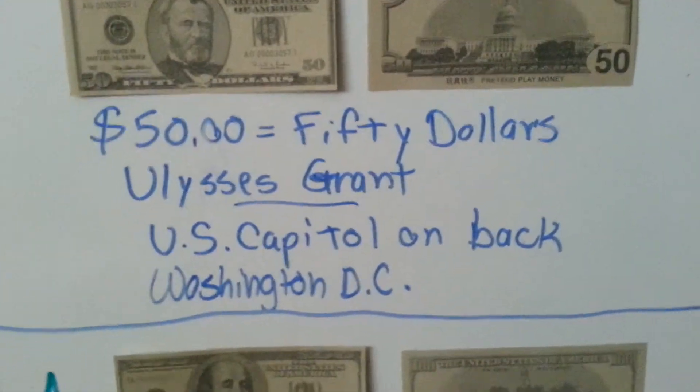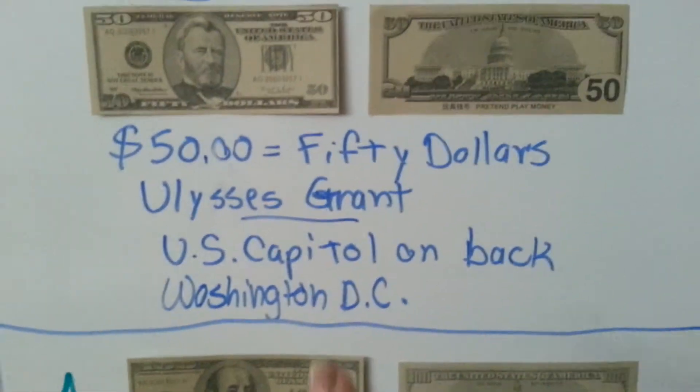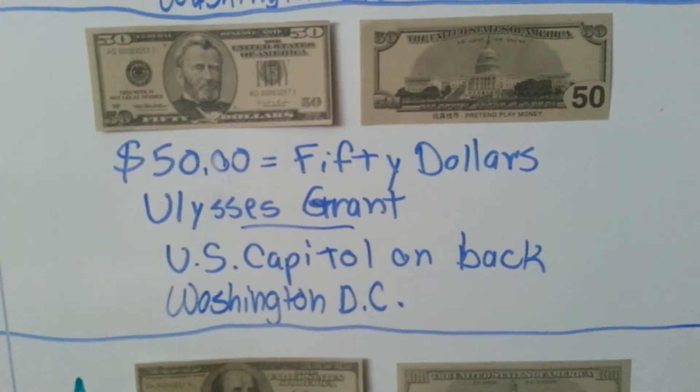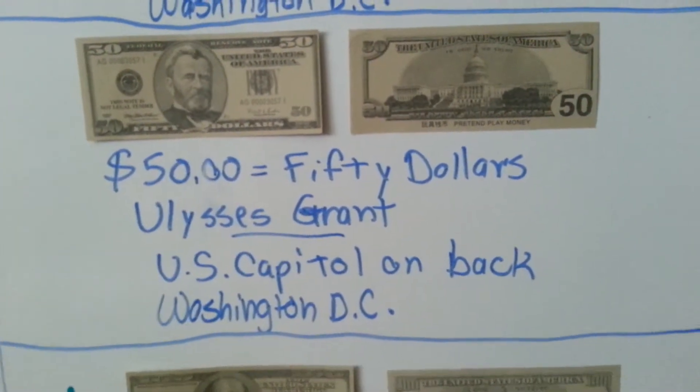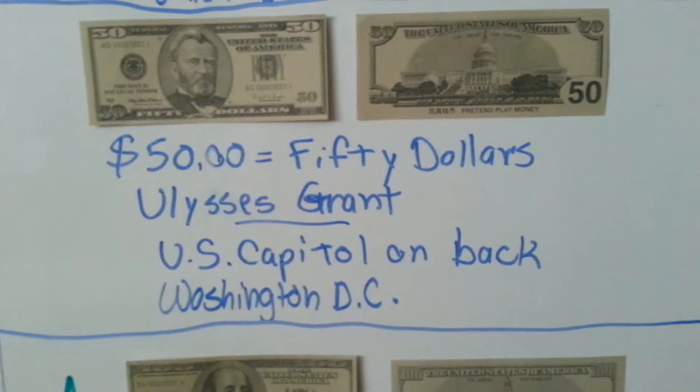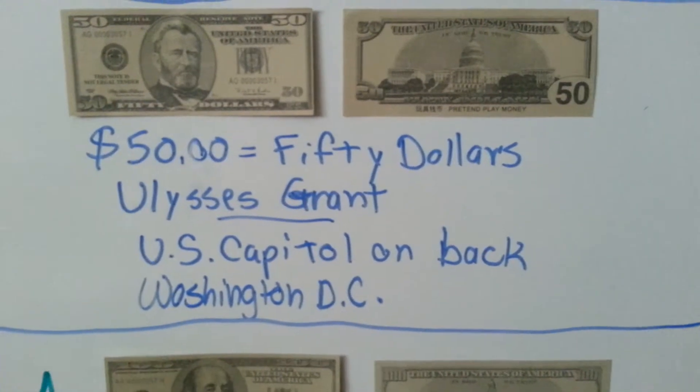This is a fifty dollar bill. On the front is a picture of Ulysses Grant, and on the back is a picture of the U.S. Capitol in Washington D.C.